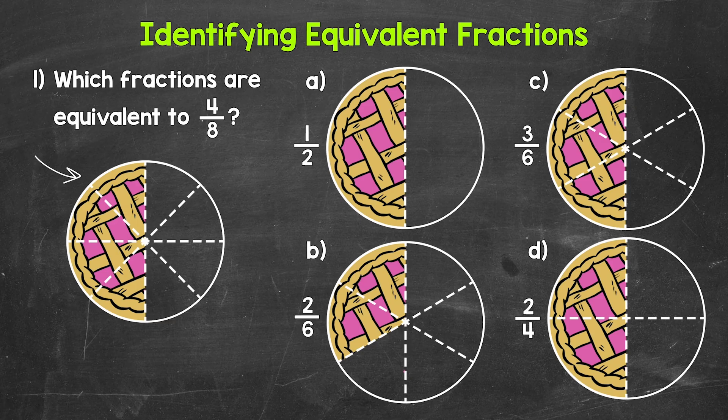Let's start with choice A, one half. Is this equivalent to 4 eighths? Is the same amount of pie left? Do we have the same part of the whole? Looking at the pictures of the pies, yes, we do have equivalent fractions here. These fractions represent the same amount, the same part of the whole. So 4 eighths and 1 half are equivalent fractions.